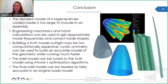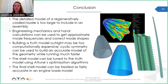In summary, a detailed model of a regeneratively cooled nozzle is too large to be included in an assembly, but it can be simplified by instead building a 2D shell model. Engineering mechanics can be used to obtain the approximate behavior of the nozzle. When the geometry is complex, cyclic symmetry can be used to build an accurate truth model much more quickly. The shell model material properties can then be tuned to match its mode shapes and frequencies to that of the truth model. The resulting shell model can be treated as fairly accurate in an engine loads model and will solve in seconds.